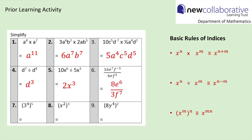Question 7: using the third basic rule of indices, that simplifies to give 3 to the power of 20. Question 8 similarly simplifies to x to the power of 6. Question 9: deal with the numerical parts and powers of y separately — 8 to the power of 2 is 64; y to the power of 4 to the power of 2 is y to the power of 8. So we get 64y to the power of 8.